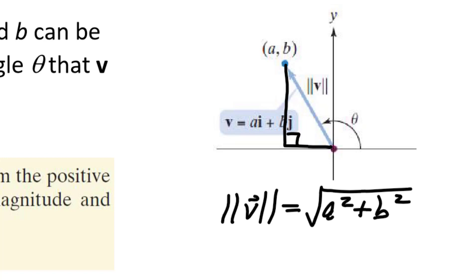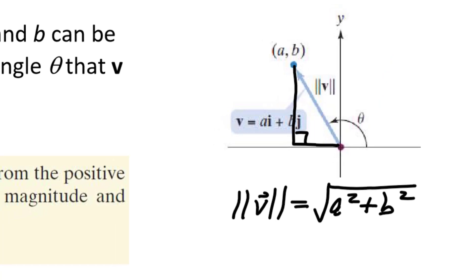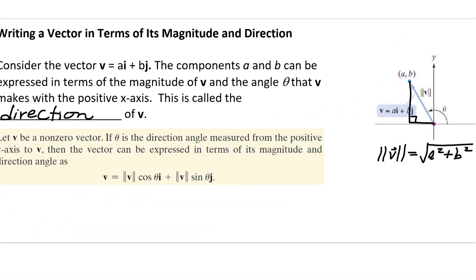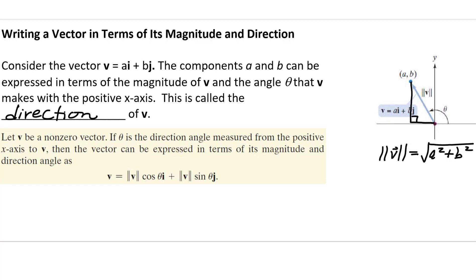What we're going to add to this discussion now is the angle theta that's formed between the vector and the positive side of the x-axis. The components a and b can be expressed in terms of the magnitude of v and the angle theta that v makes with the positive x-axis. The angle theta that v makes with the positive x-axis is called the direction of v.